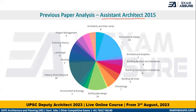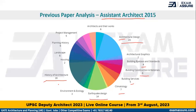If you see, majority of the questions are from Architectural Design — roughly 20 questions. Then you have another major part from History of Architecture — 16 questions, 14 questions from Earthquake Design. Then you have Building Construction, Building Bylaws and Standards, Building Services and Climatology. All of these are quite important topics, but major weightage is given to Architectural Design and History of Architecture.